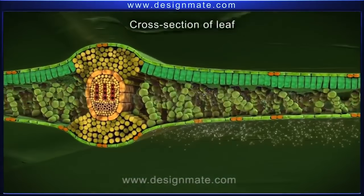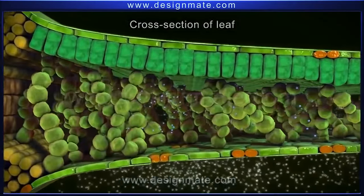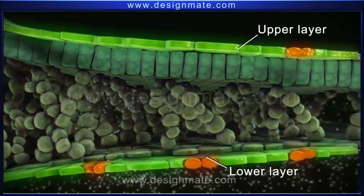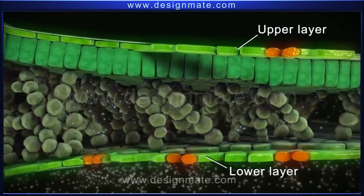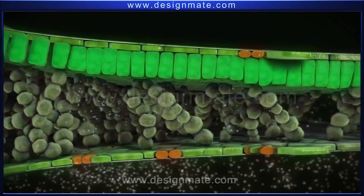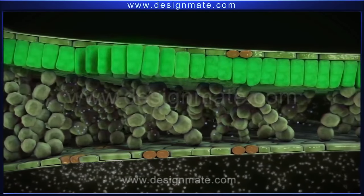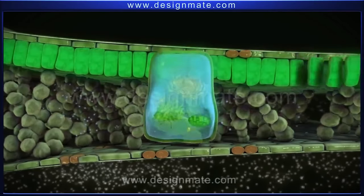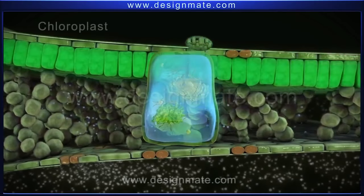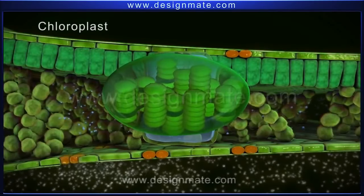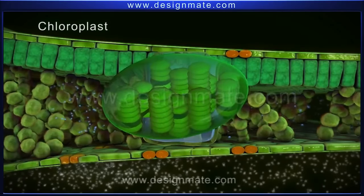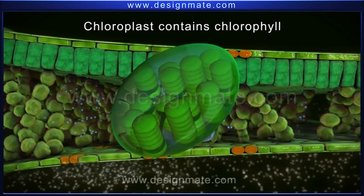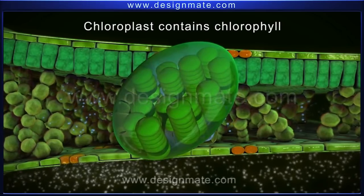A cross section of the leaf shows the upper and lower layers of cells which are flat and irregular. These cells have specialized organelles called chloroplasts. Chloroplasts contain the pigment chlorophyll, which gives the green color to the leaf.